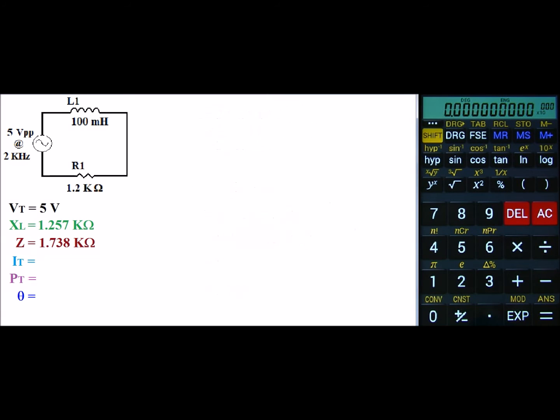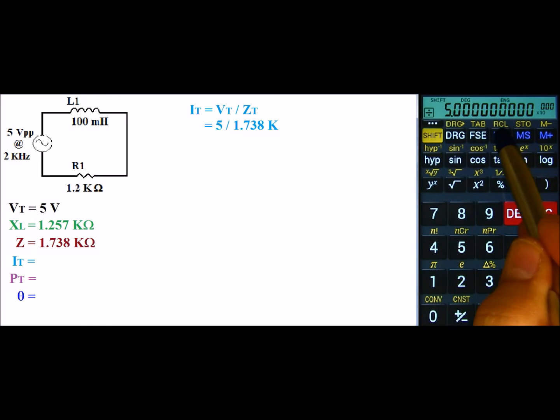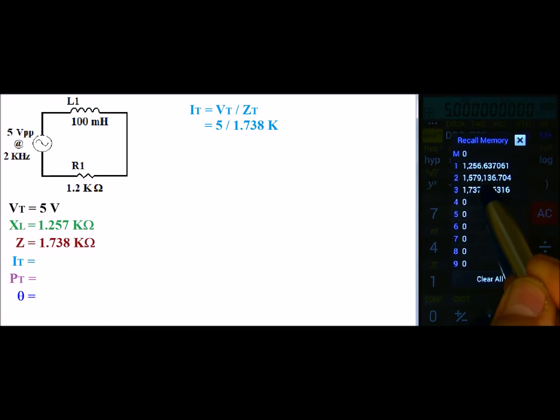Next, we need to find I total. I total is defined as V total divided by Z total. So in this circuit, that is 5 volts divided by 1.738k. So we have 5 divided by, and I'll go ahead and recall my Z value of 1737.